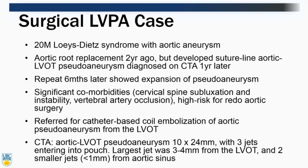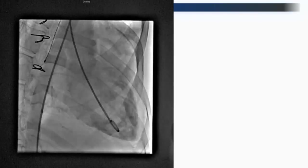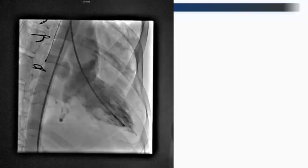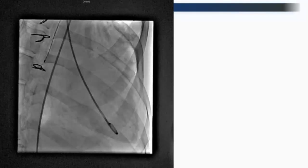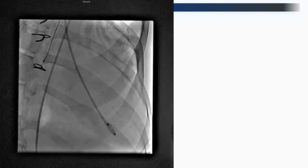Six months later the pseudoaneurysm expanded. The patient was too high risk for redo surgery. On CT, the LVOT pseudoaneurysm measured 10 by 24 mm with three jets — the largest from the LVOT and two smaller jets above the aortic valve. A vascular plug was considered but risked impinging on the aortic valve given the proximity, and would not close the two additional jets above it. So we collaborated with neuroradiology and chose a coil technique.